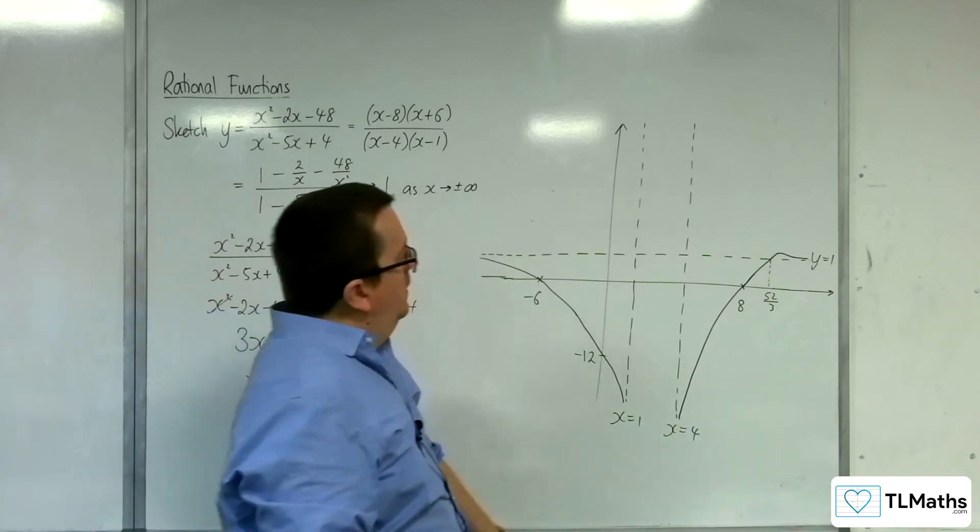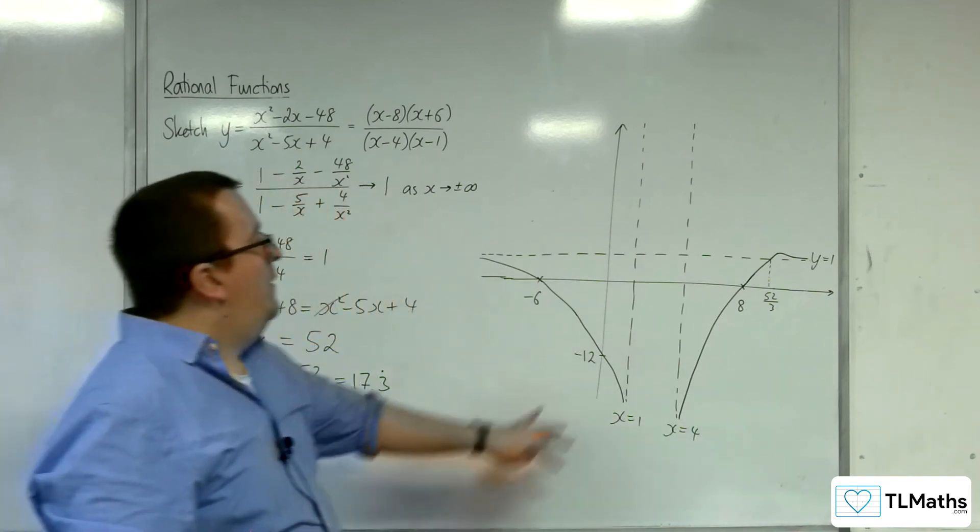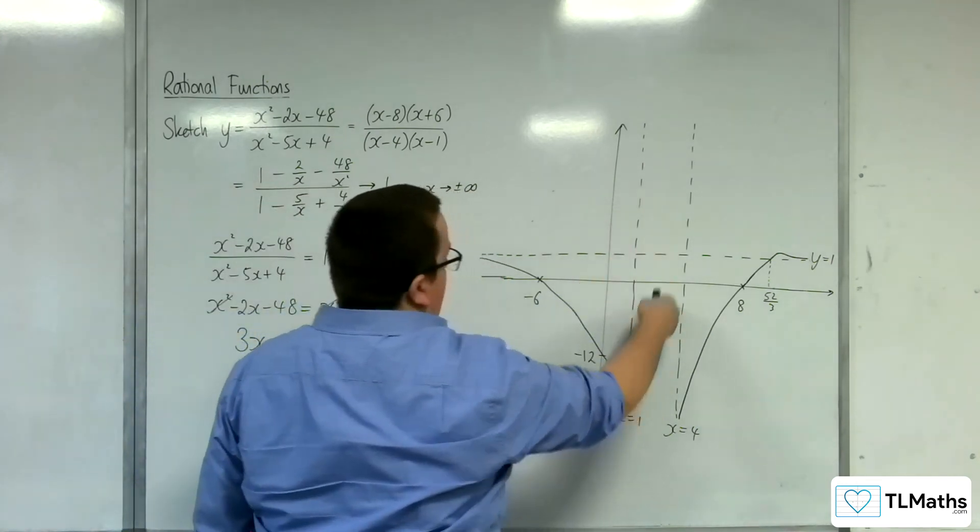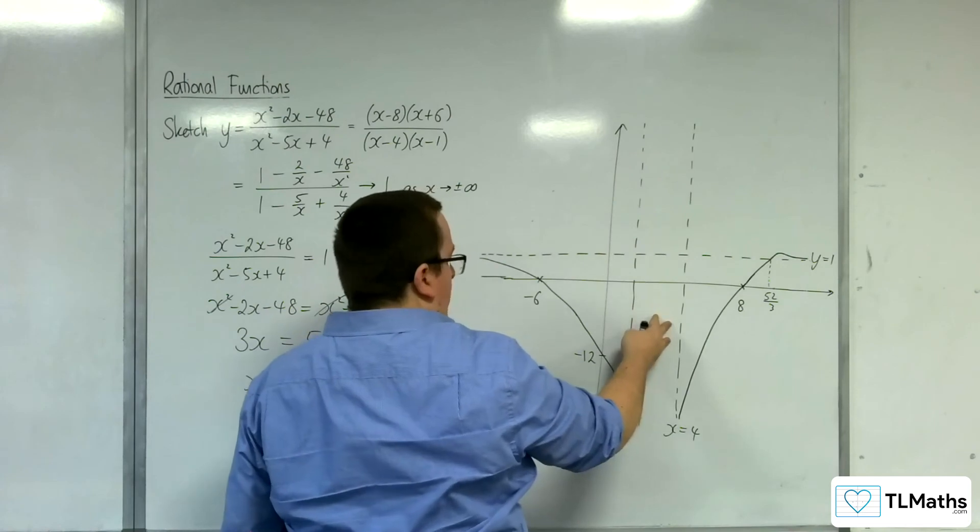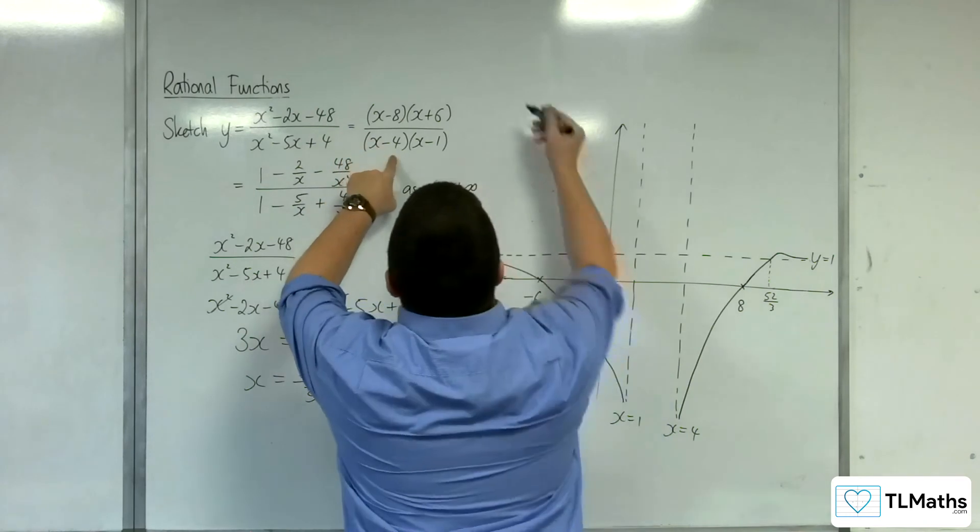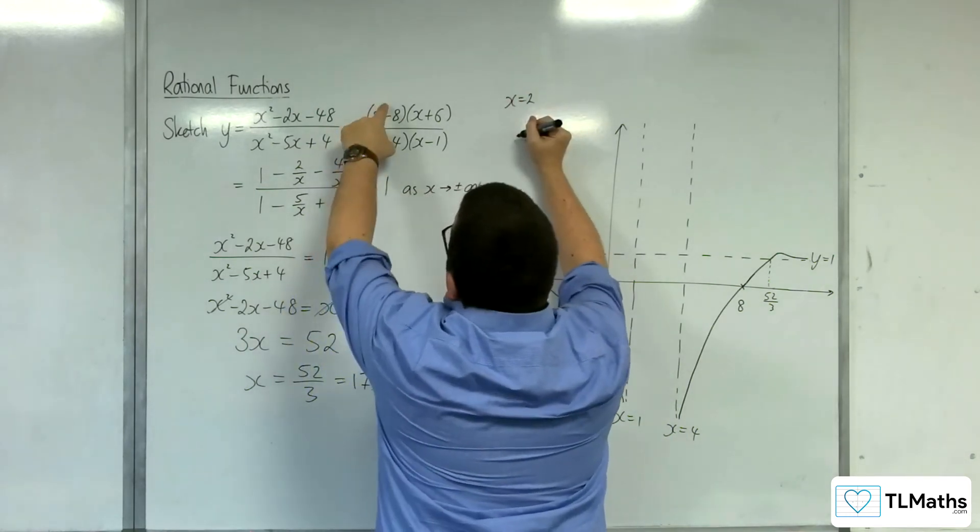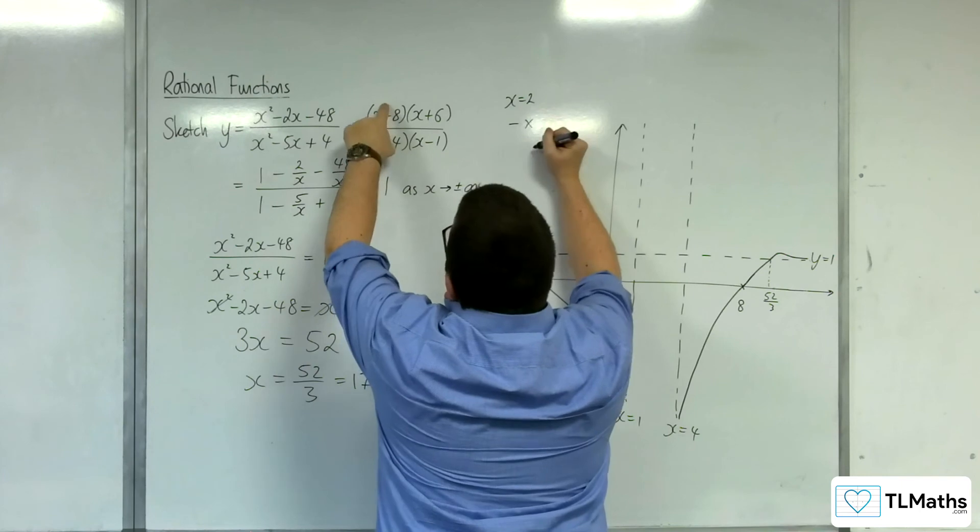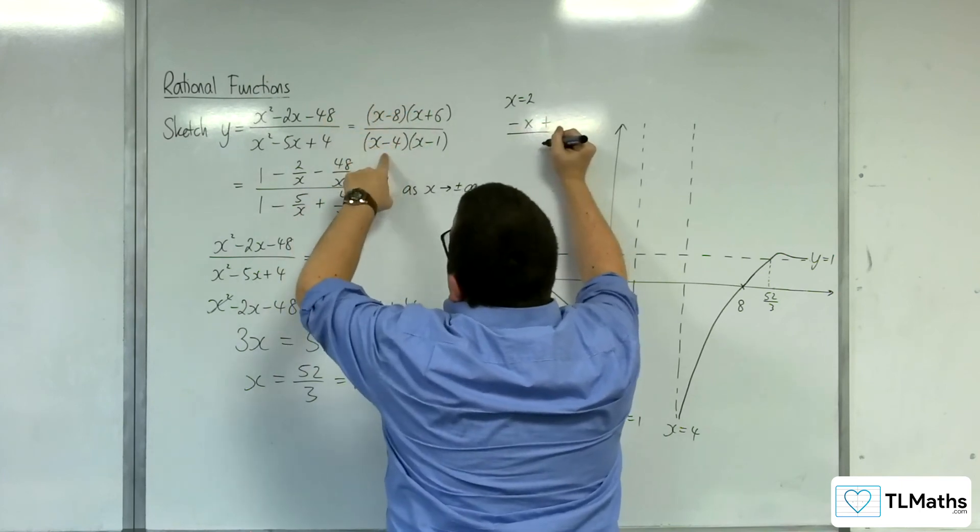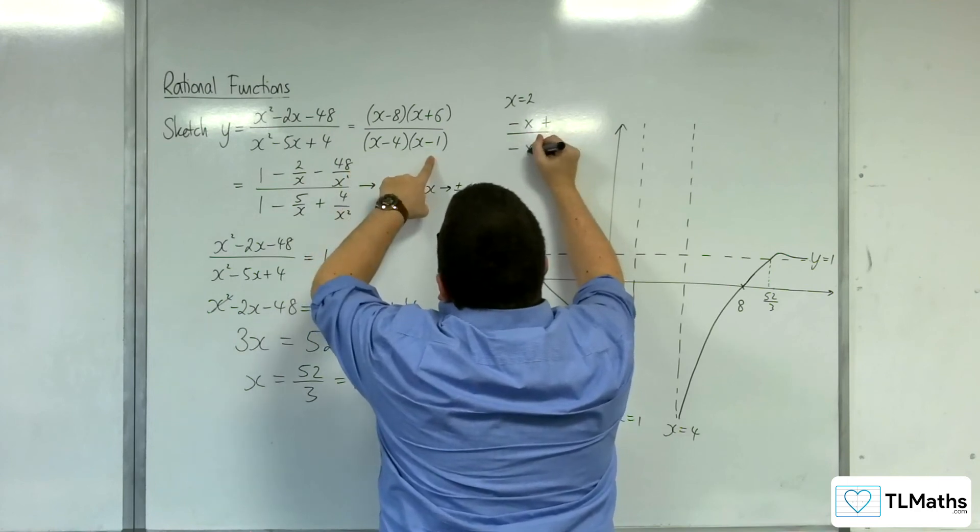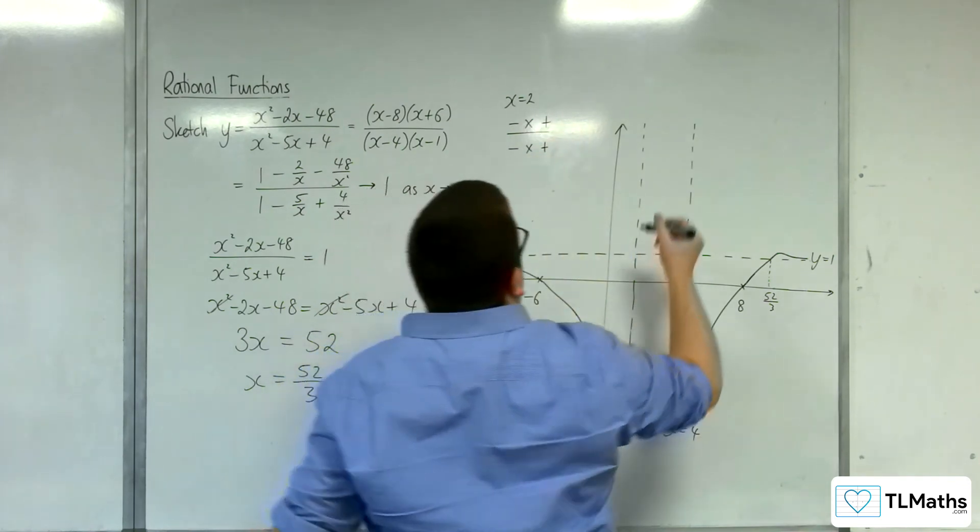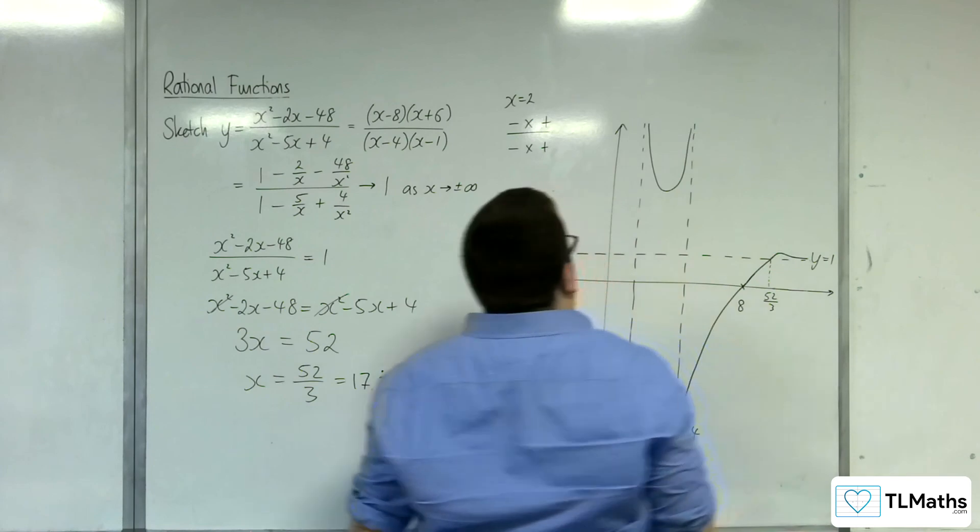So then, what about in between? Is it positive or is it negative? Is it up here or is it down here? So if I substitute in x equals 2, I'm going to substitute x equals 2 into this. So what do we get? 2 take away 8, well that's negative. And 2 plus 6 is positive. 2 take away 4 is negative. 2 take away 1 is positive. So we've got a negative divided by negative, which is positive. And so the curve must be somewhere up there.